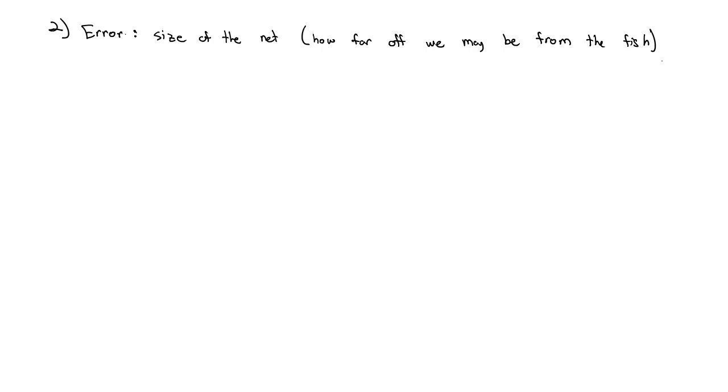And if we want to be more confident that we catch the fish, to be more confident of success in catching the fish, we need a bigger net. Or in other words, we need to allow for a bigger error.